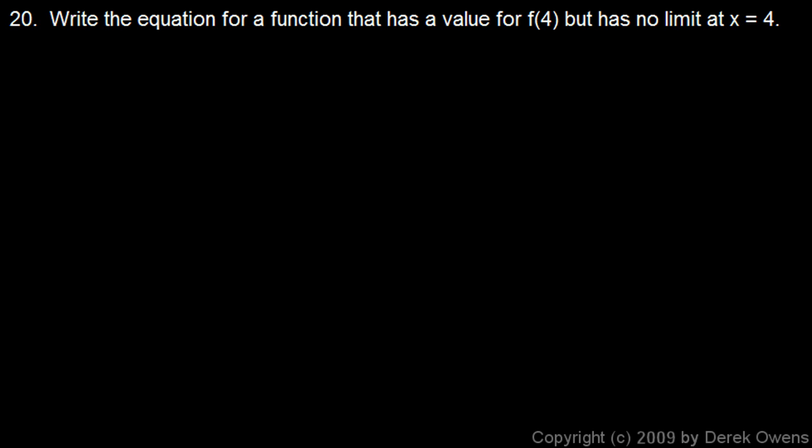Number 20: write the equation for a function that has a value for f(4) — in other words, a value when x equals 4 — but has no limit at x equals 4. If it has no limit, that means it could have left and right limits that aren't the same. We can satisfy these conditions by coming up with a piecewise function.